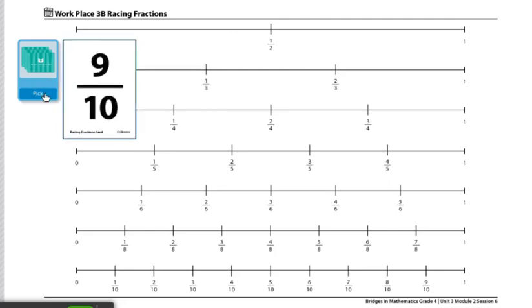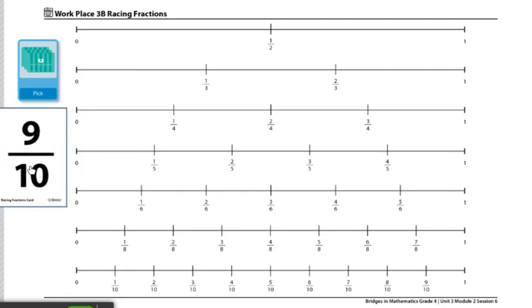Player 1 will then draw a new card, which is 9 tenths, and move one or more game markers the distance shown on the card. So I can choose to go 9 tenths right now all the way down here, or if I wanted to do an equivalent fraction to 9 tenths, I would do 1 half plus 4 tenths, because those two fractions added together would be 9 tenths.